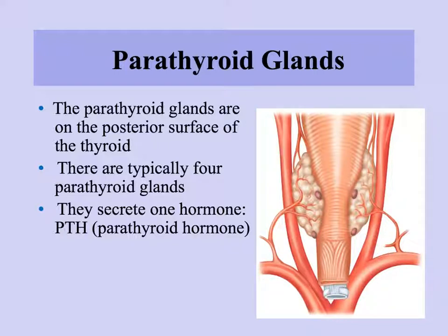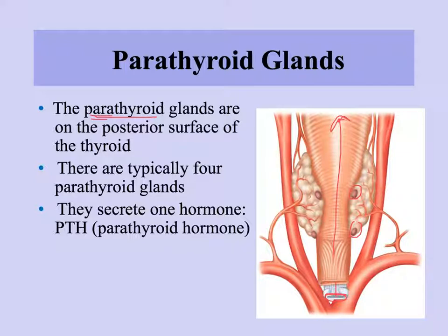The parathyroid gland is found on the backside of the thyroid — usually four small parathyroid glands. 'Para' means beside, so the parathyroid is beside the thyroid, just as paracrine refers to affecting cells beside the secreting cell. The parathyroid glands secrete only one hormone — parathyroid hormone — and it works with calcitonin to regulate blood calcium levels.